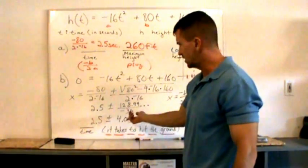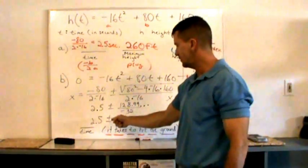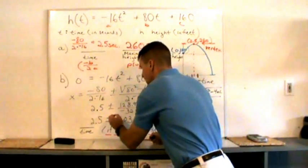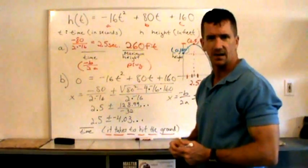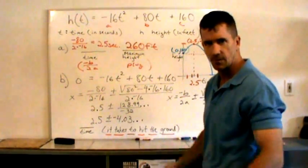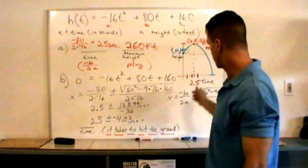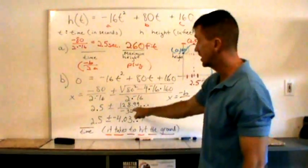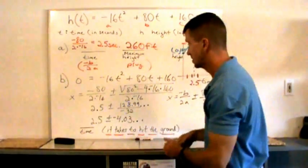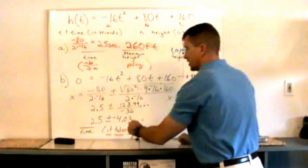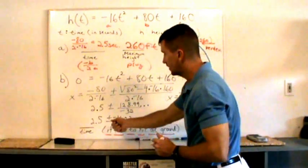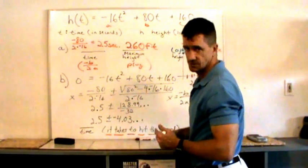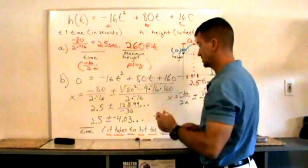So our answer, we got two answers here. Which one are we taking? Is it 2.5, that's a negative, plus negative 4.03? Or is it 2.5 minus a negative 4.03? Everyone, our answer has to be positive, right? Time has to be positive. So we'll take the positive solution of these two solutions. Now these two solutions right here, 2.5 minus 4.03 or 2.5 minus a negative, which is 2.5 plus 4.03. We'll take the positive.